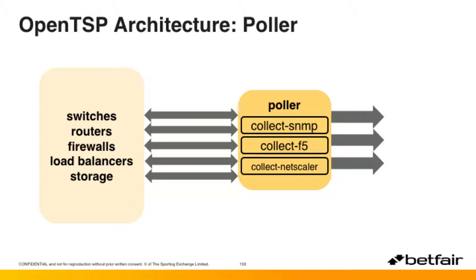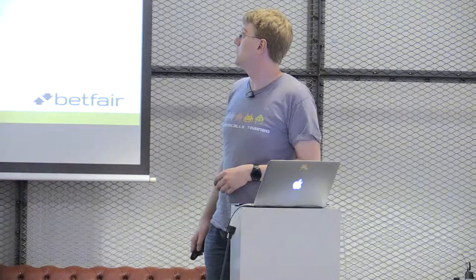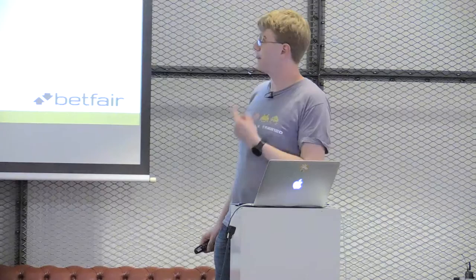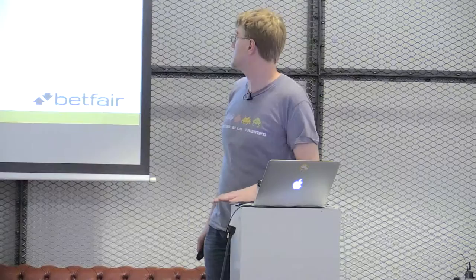The next piece is Polar — for parts of your estate where you can't run code. Polar runs basically the same way as the forwarder: sits in a box, watches a directory for plugins. The plugin doing most of the heavy lifting is collect-SNMP, but we've also got ones for F5 and NetScalers using their REST APIs and HTTP to gather metrics.